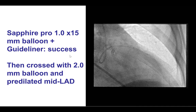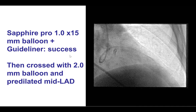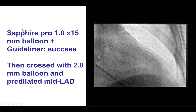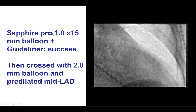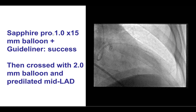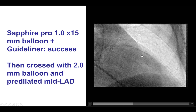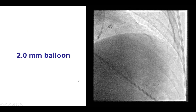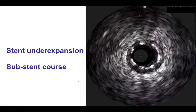We did not want to lose our distal wire position. Therefore, a 1.0 by 15 mm Sapphire Pro balloon, which is the lowest profile balloon currently available in the US, was used, and that could cross through the mid-LAD stent. Then there was dilatation, followed by a 2.0 mm balloon, which then allowed an IVUS catheter to get through.